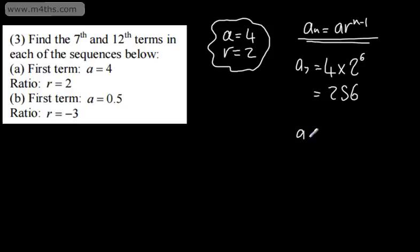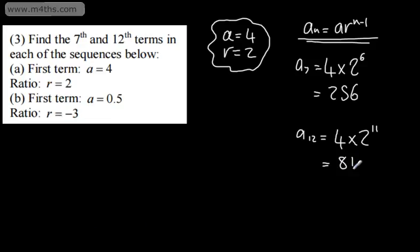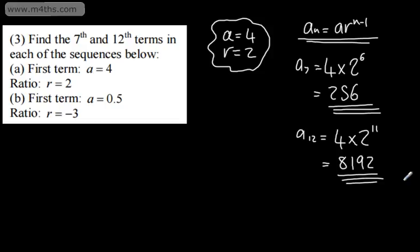Let's now look at the 12th term, a sub 12. The 12th term is the first term, 4, multiplied by the common ratio to the power of 11 — that is 12 minus 1. So all we're going to do is go ahead and calculate this, and that will give us the value of 8192. So the 7th term in this particular sequence is 256, and the 12th term is 8192.